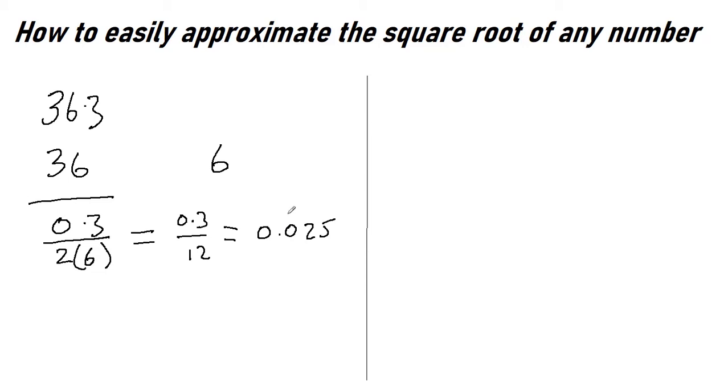Now all we need to do is add that back to our 6 and we end up with 6.025 as our approximate square root of 36.3. Let me just type that into the calculator and see what it actually is. The actual answer is 6.0249. So as you can see that's pretty close. That's to within about one ten thousandth.